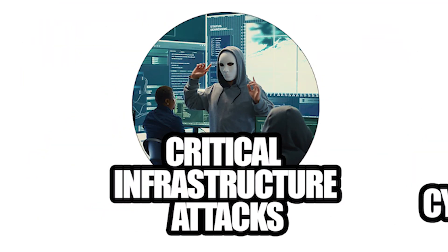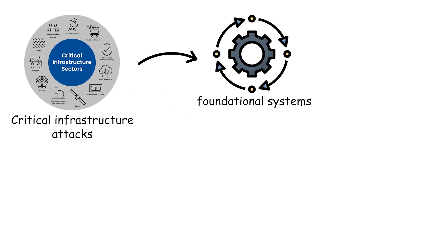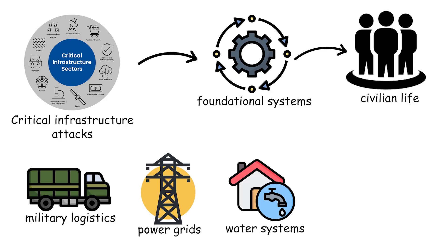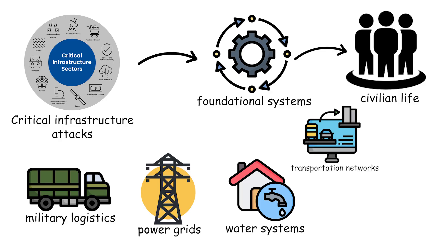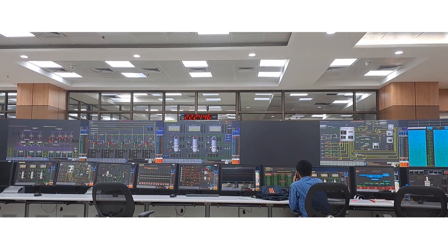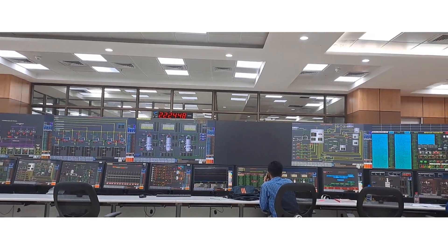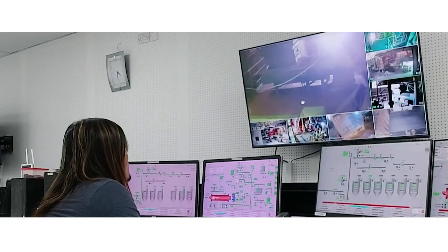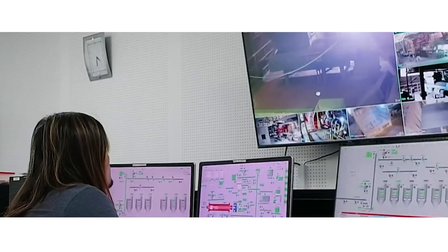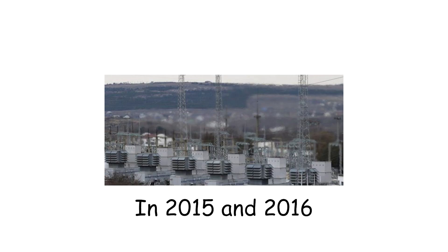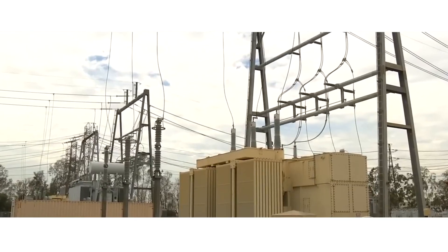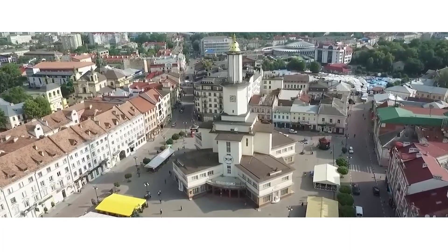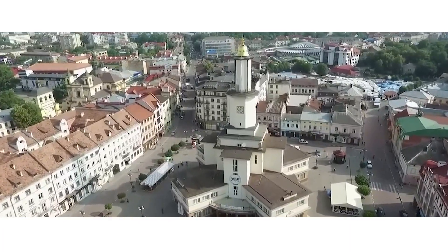Critical infrastructure attacks target the foundational systems that sustain civilian life and military logistics — power grids, water systems, transportation networks, and aviation services. Operations at this level establish long-term access to industrial control systems and service provider platforms to hold essential services at risk or to execute timed disruption during conflict. In 2015 and 2016, Ukrainian power companies were hit with cyber intrusions that manipulated SCADA systems, causing regional blackouts and proving that adversaries could remotely disable energy distribution.